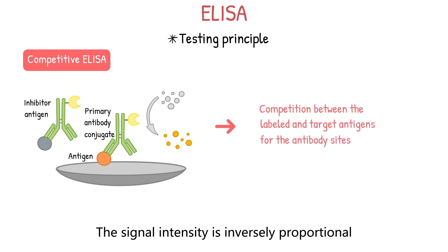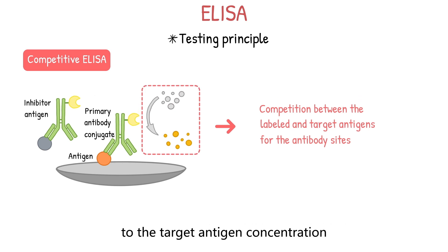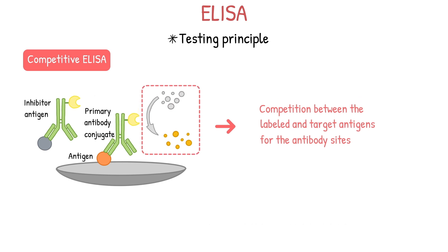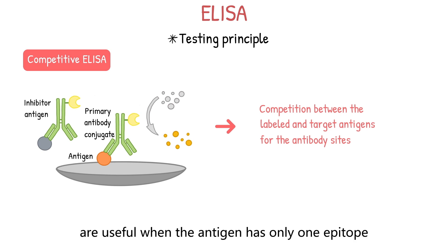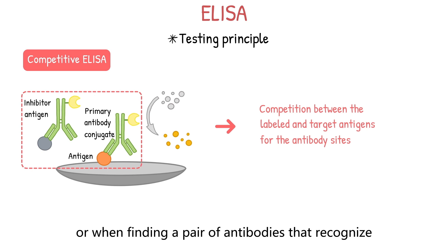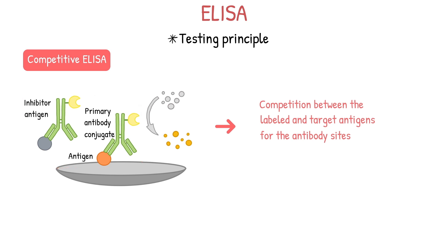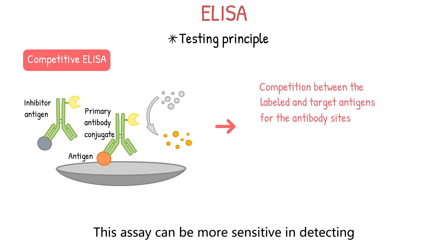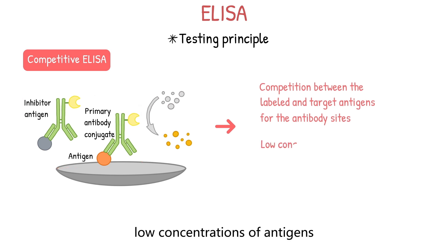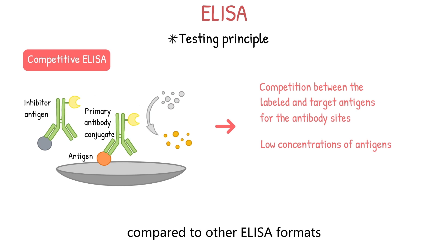The signal intensity in a competitive ELISA is inversely proportional to the target antigen concentration. Competitive ELISAs are useful when the antigen only has one epitope, or when finding a pair of antibodies that recognize different epitopes without interference is difficult. This assay can be more sensitive in detecting low concentrations of antigens compared to other ELISA formats.